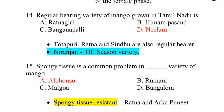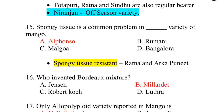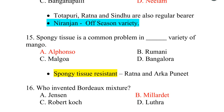Fifteenth one. Spongy tissue is a common problem in the Alphonso variety of mango. Ratna and Alpka Punit are two varieties that are resistant to spongy tissue. The inventor of Bordeaux mixture is Millardet.